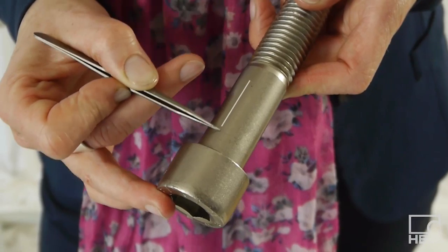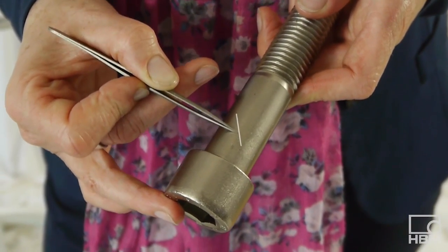First of all, you have to ask the question in which direction the material is being strained the most, or in other words, in which direction does the principal stress run? For tensile and compressive strain, this will be axial, and for torsional strain, diagonal.